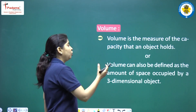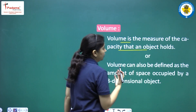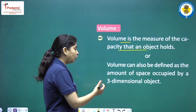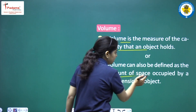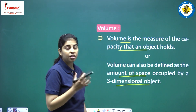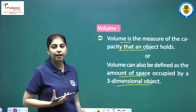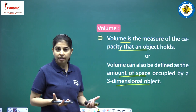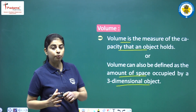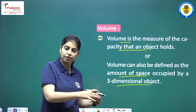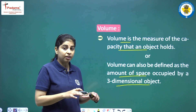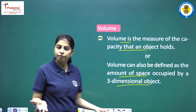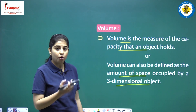Next we have volume. Volume is the measure of the capacity that an object holds. Volume can also be defined as the amount of space occupied by a three-dimensional object. If we take a container whose capacity is 1 litre, it means it can hold 1 litre of liquid or water. If you shift that 1 litre to another container of 2 litre capacity, the volume will not be different — it will remain 1 litre. Volume is the capacity of an object to hold.